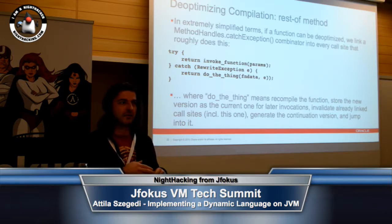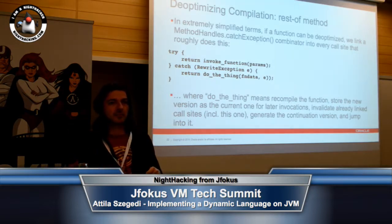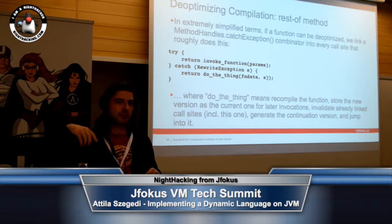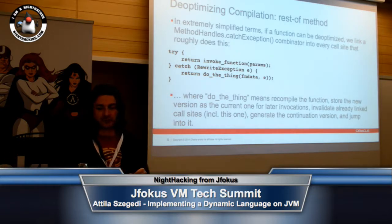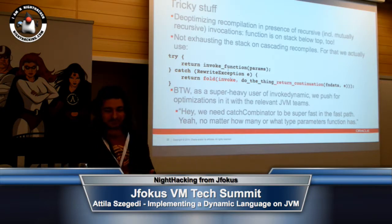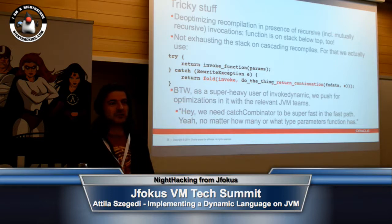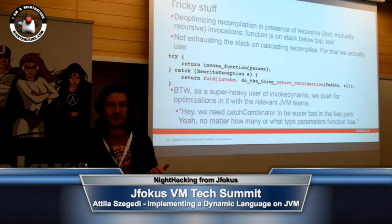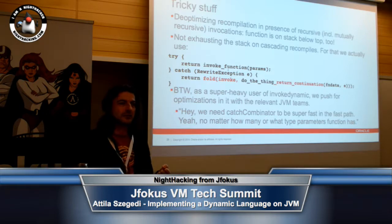We are using switch points: if you are calling a function from multiple locations, then a de-optimizing recompilation in one will use a switch point invalidation to invalidate all the others. So next time they are hit, they will actually relink to the new version of the code. Of course, there's tricky stuff, like the optimizing recompilation in the presence of either recursive or mutually recursive functions. It's problematic because now you have the new version of the code executing on your stack top, but you can still have the old version of the code executing somewhere below.